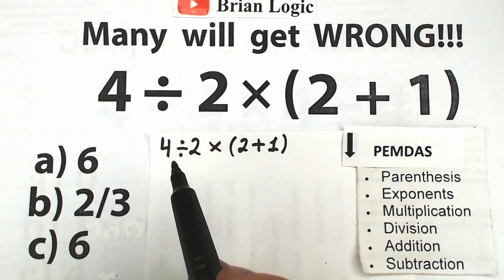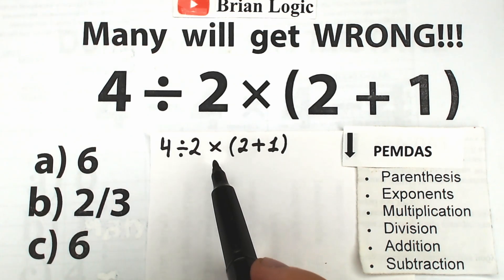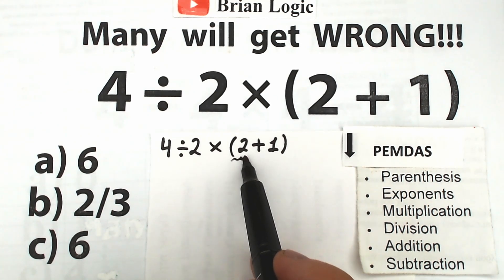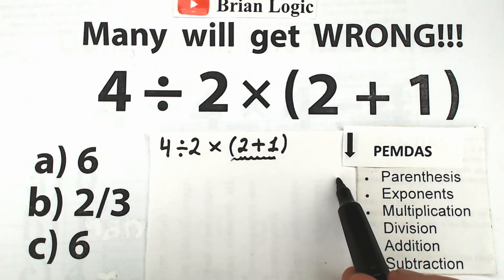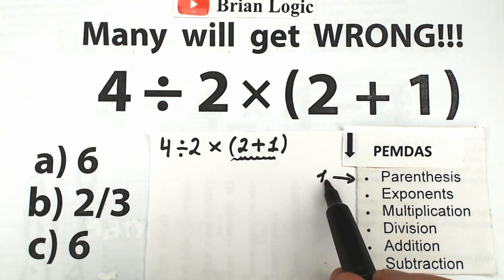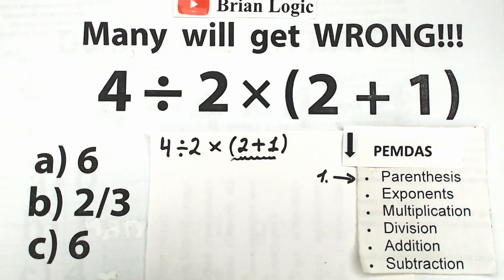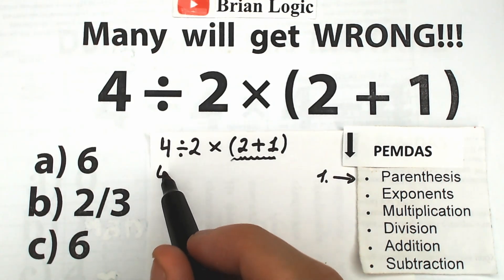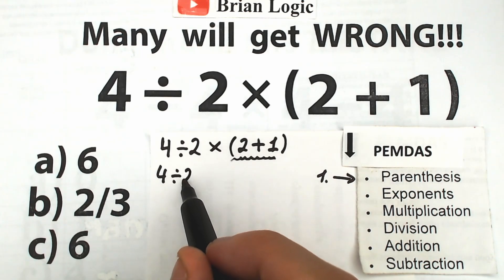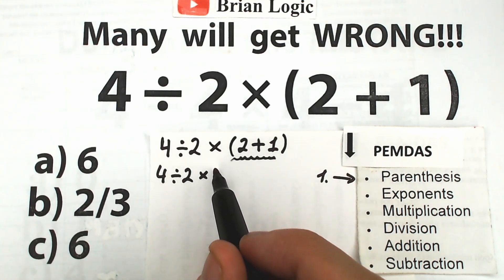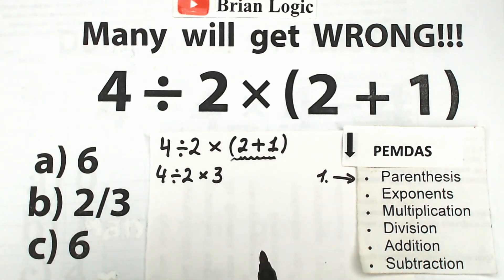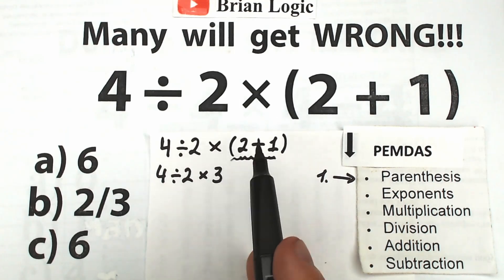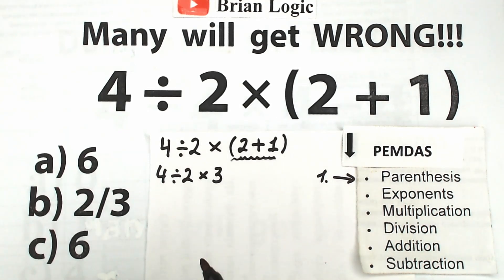Let's solve this challenge according to PEMDAS. First step is parentheses — let's scan where we have parentheses in our challenge. We have parentheses at the end, so first we should evaluate the expression inside those parentheses: 2 plus 1 equals 3. So now we have 4 divided by 2 times 3. That's very basic addition, and we've completed the parentheses part.